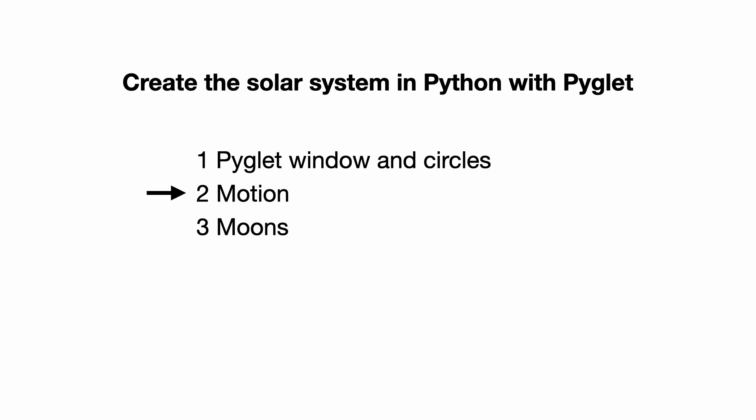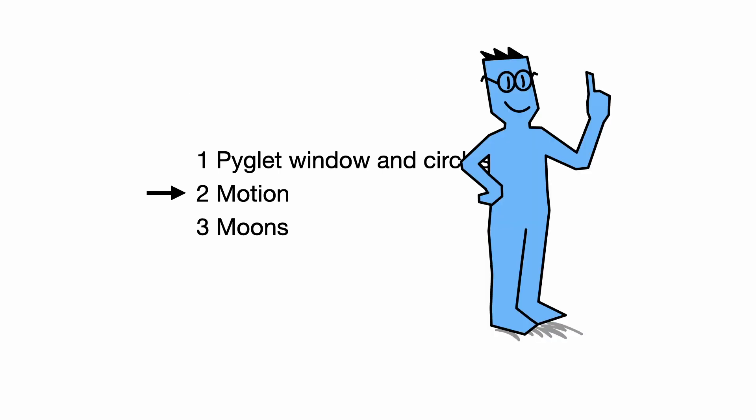In this video you learn how to create the solar system as it was known 400 years ago. For this you will use Python and Pyglet and get an insight in graphics and motion. This video is part two of a series. In this part you learn how to add motion to the system. If you have missed the first part of this tutorial click here to watch it first. Otherwise let's go!